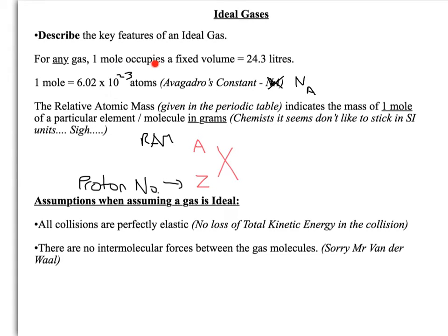There's a few things that apply to any type of gas. First of all, one mole occupies a fixed volume of 24.3 litres, sometimes called decimetres cubed. What is a mole? One mole is 6.02 times 10 to the power of 23 atoms. That number is called Avogadro's constant, and you might see it given the symbol capital N subscript A.